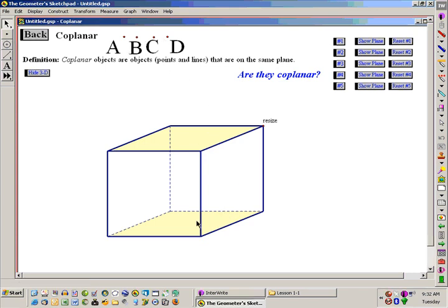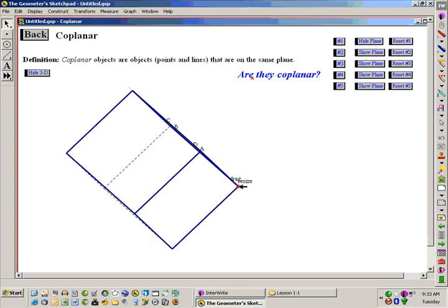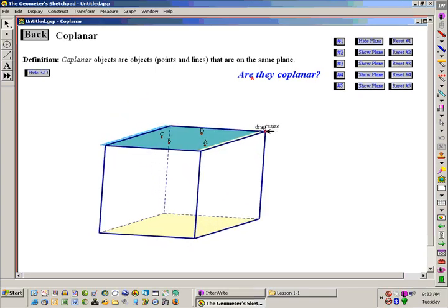I'm going to place these points in this three-dimensional prism. Are these points coplanar? Well, if there's a plane that contains all four of them, the answer would be yes. And here's the plane. This plane holds those four points because they're all on the top of the box. Coplanar.